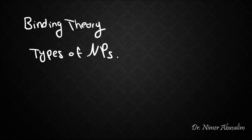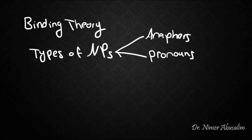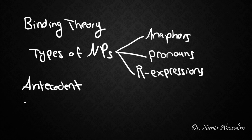Hello and welcome back to another lecture on syntax. In our previous lecture, we introduced binding theory. In particular, we talked about types of noun phrases. We said that there were three types: anaphors, pronouns, and r-expressions. We explained what antecedent means and indexation as well as co-indexation. In this lecture, we dig a bit deeper into binding theory and discuss what is meant by binding in particular.